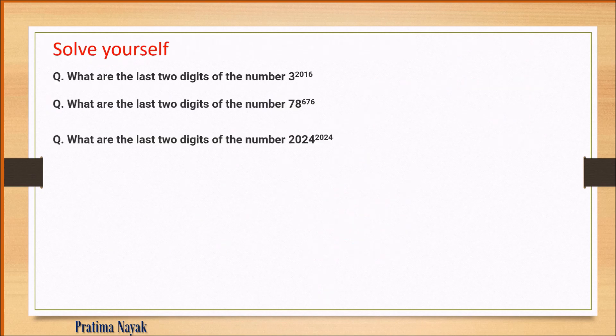Practice problems for this final group: find the last two digits of 3 to the power 2016, 78 to the power 676, and 2024 to the power 2024. Don't forget to write your answers in the comment section — please let me know whether you are able to do these.